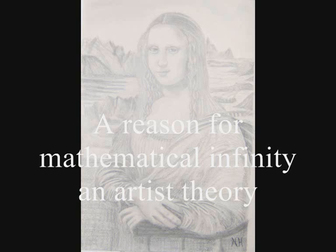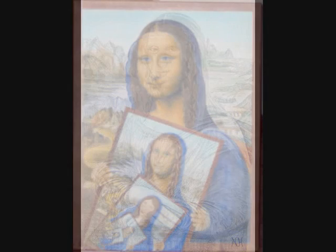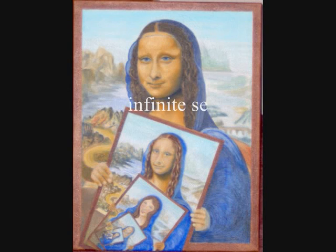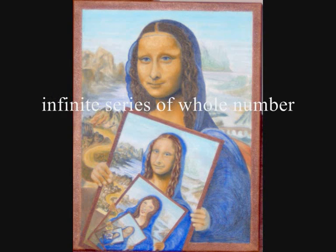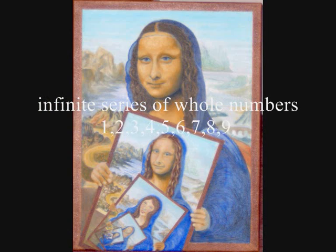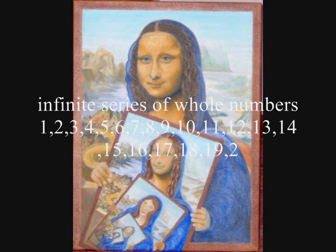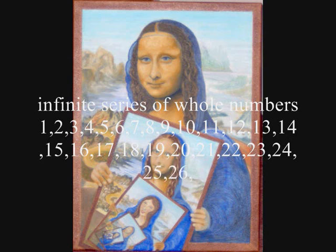We have mathematical infinity in many forms. We have the infinite series of whole numbers and the infinite series of irrational numbers like pi. There is also infinity between each whole number that can always be divided into ever smaller parts.